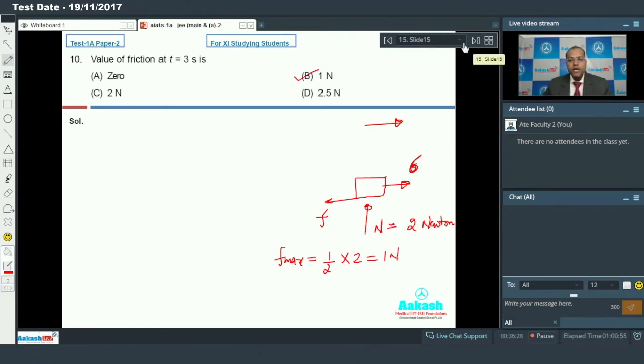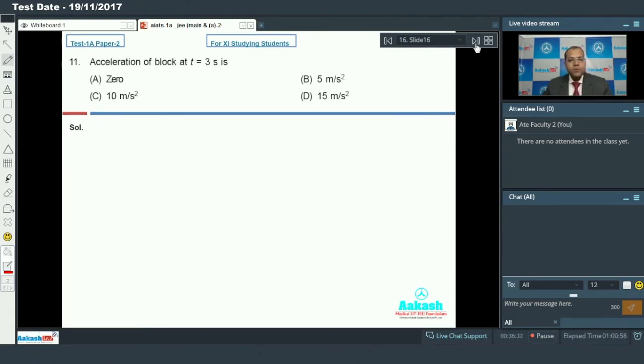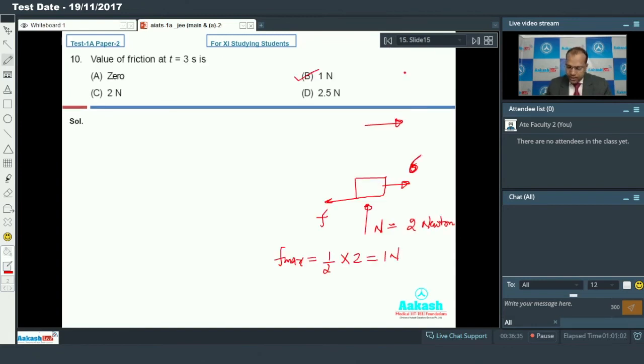Now move to the last part of this paragraph: acceleration of block at T equal to 3 seconds. The acceleration will be 6 minus 1, that is the net acceleration in the forward direction, divided by mass.